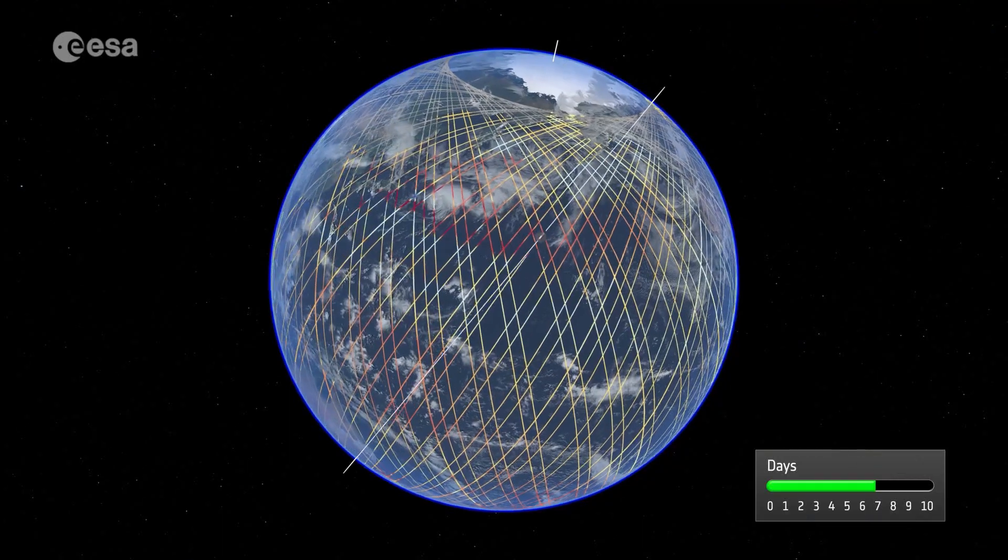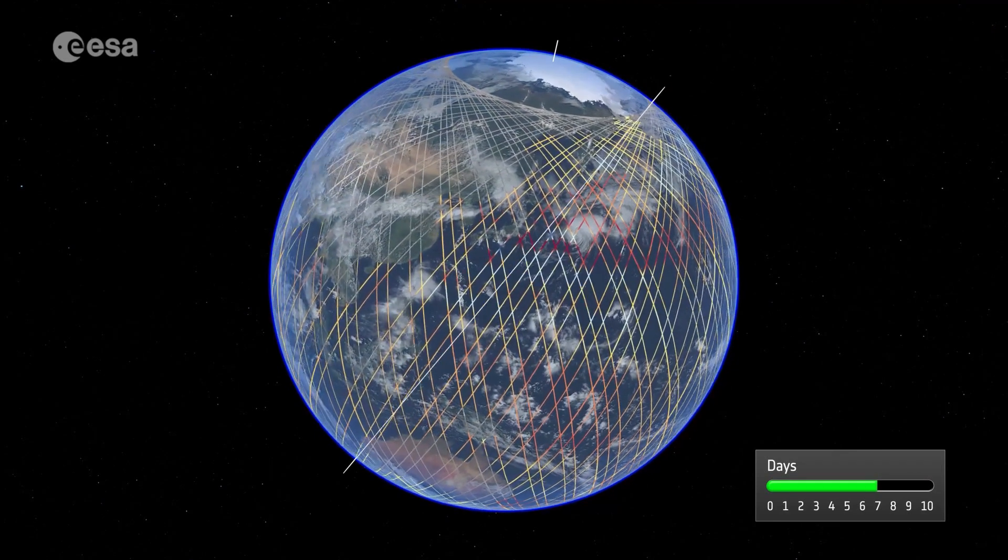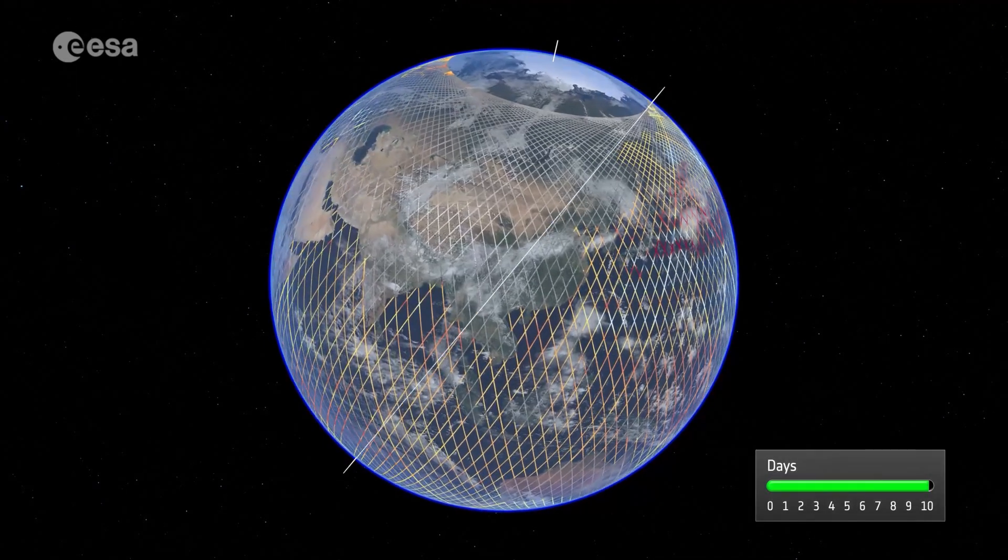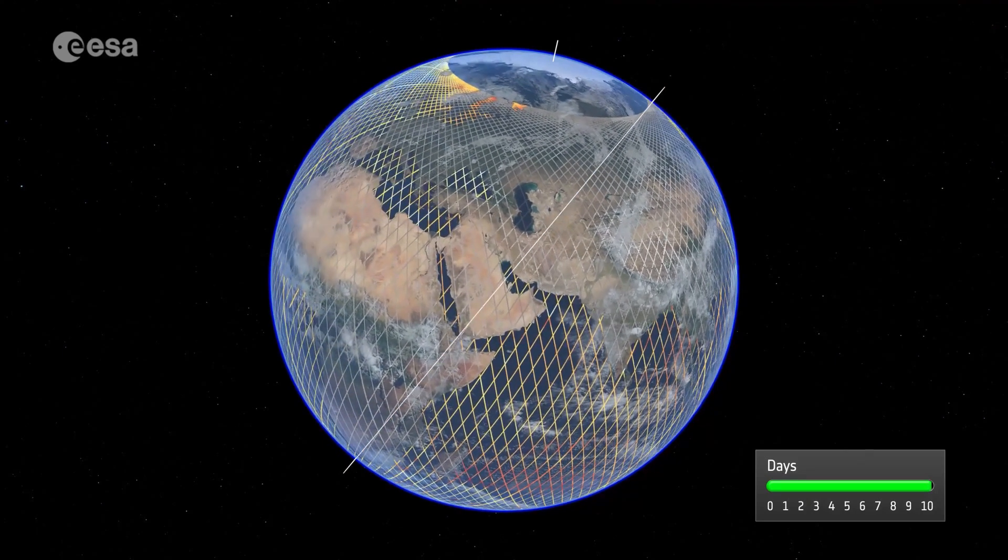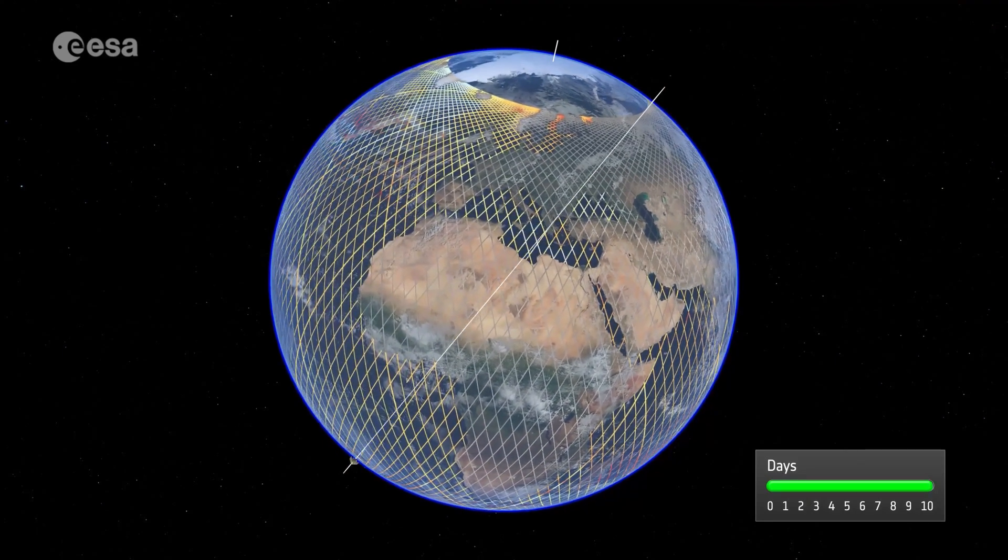Every 10 days, Sentinel-6 provides sufficient measurements to map the sea surface height of the ocean from which sea level rise can be computed. This gives the big picture, allowing us to chart sea level with confidence.